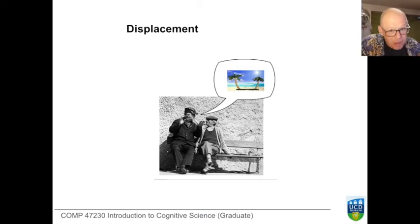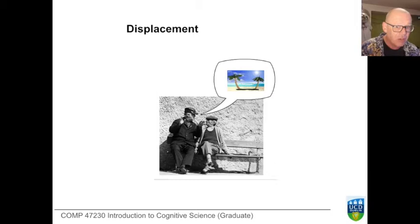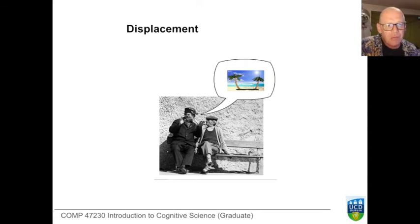But the honeybee dance does display the feature called displacement. It's one of the very few forms of animal communication where we can identify something that seems to be about something not present. We have no problem talking about our past summer holidays, fictional episodes, possible future scenarios, things that are very far away, whereas nearly all forms of communication among other forms of life are much more rooted in the present.